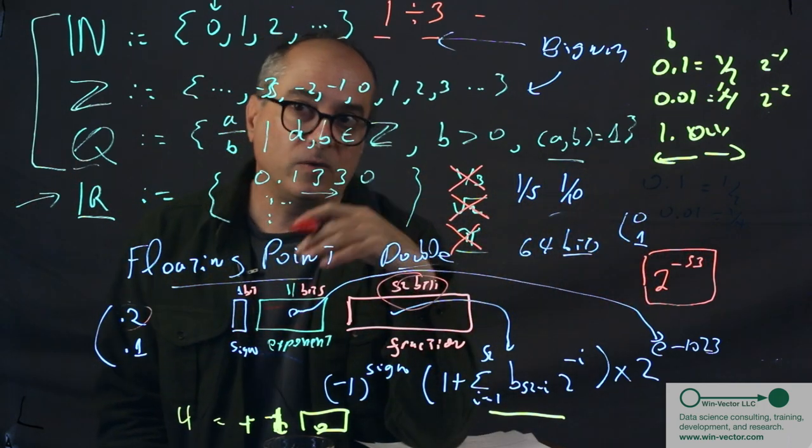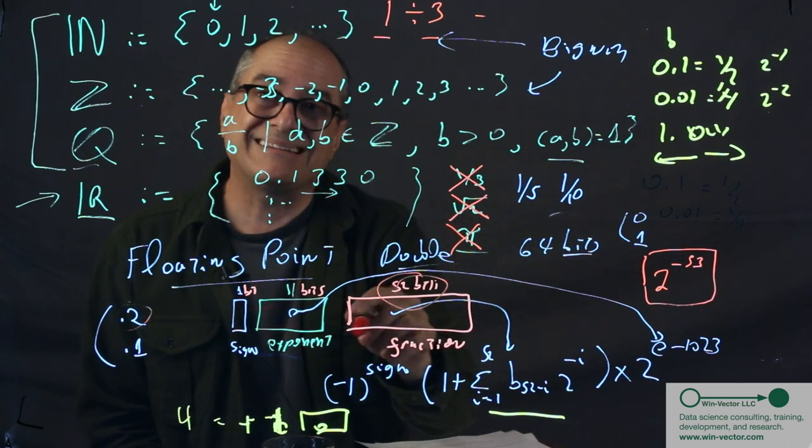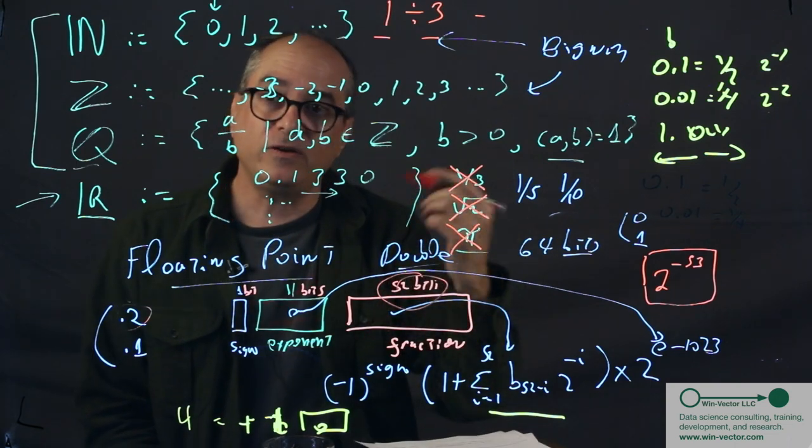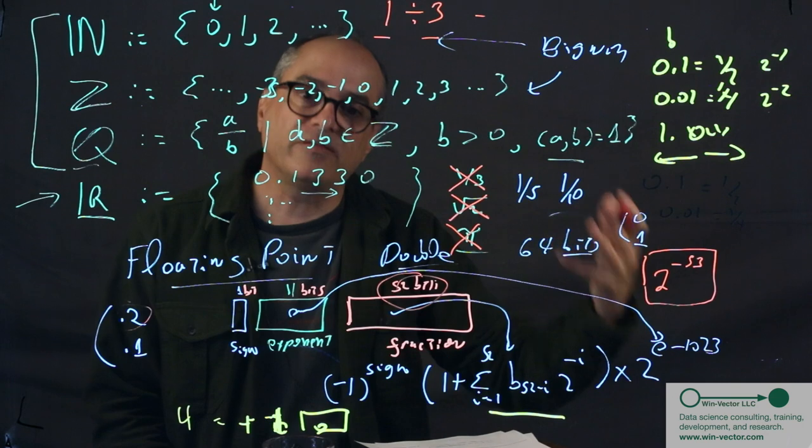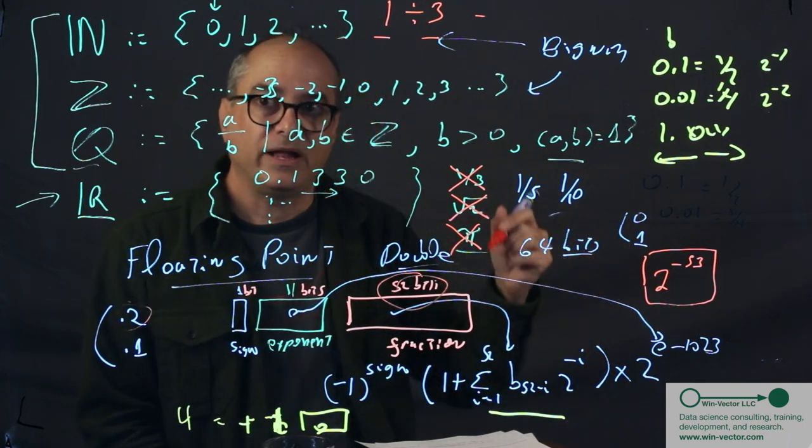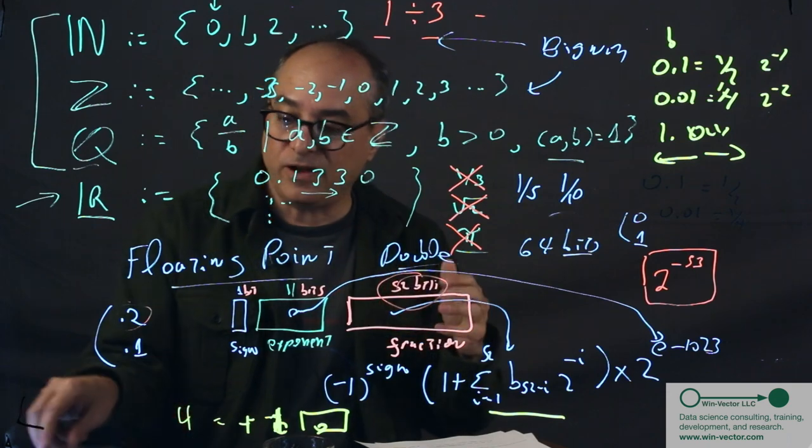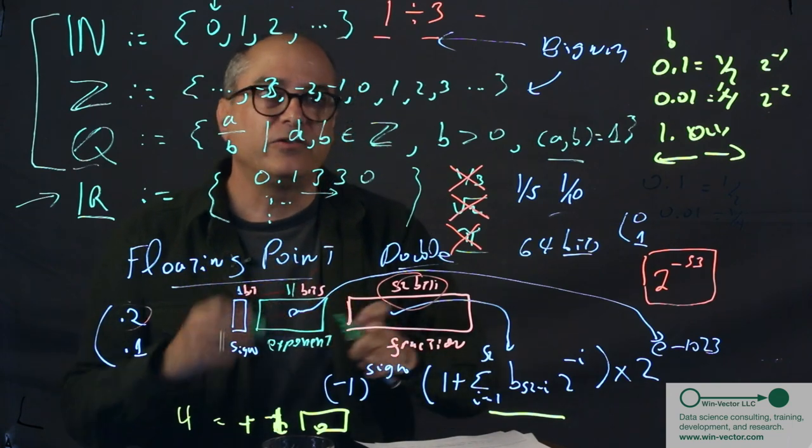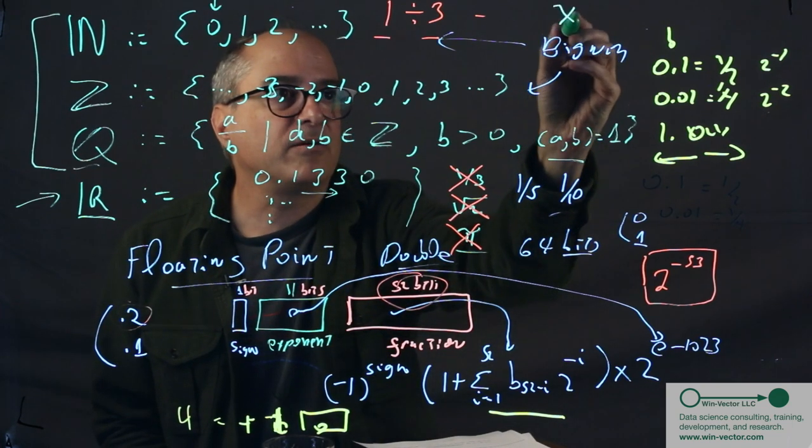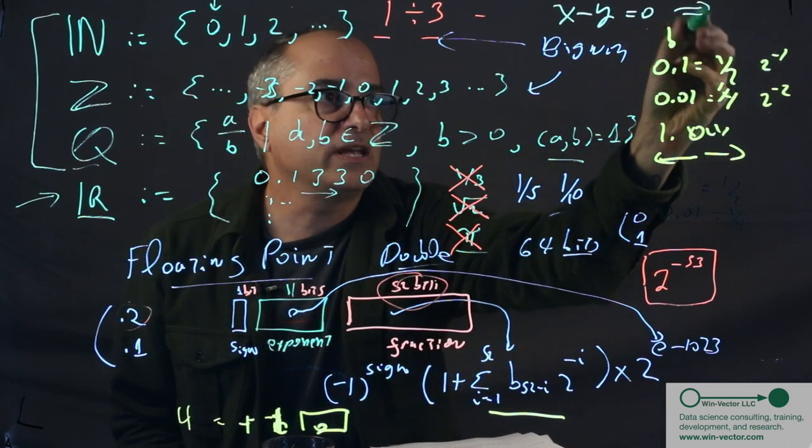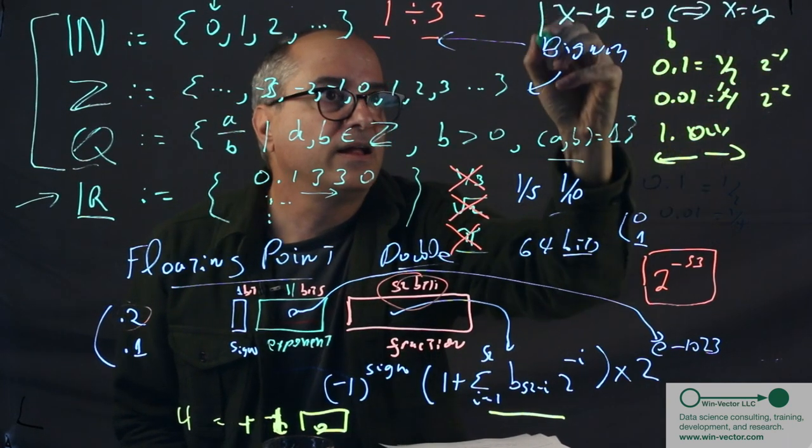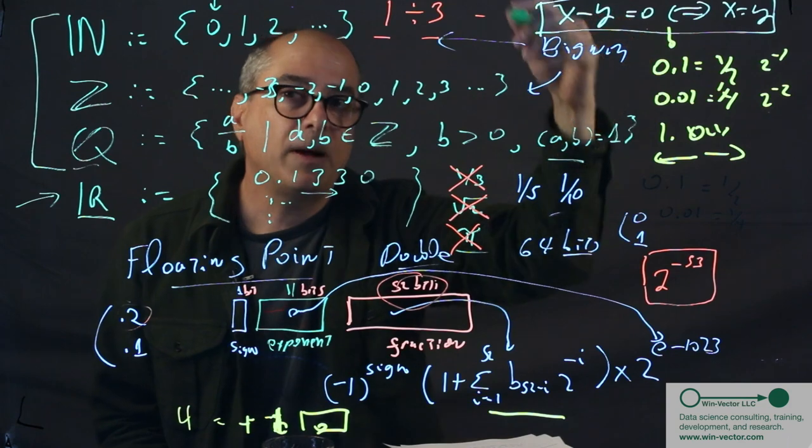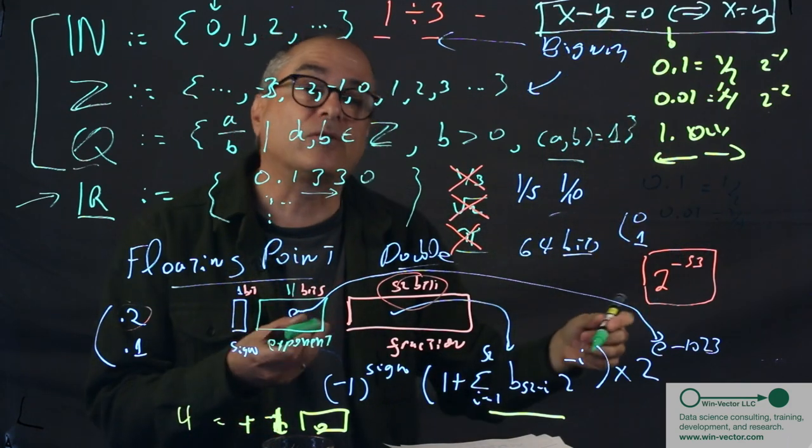However, it also means we cannot add disparate sized floating point numbers, which I'll give as an example that I'll attach on. So it turns out the simple act of just summing up a list of numbers might not work on floating point. And also, we don't have the field axioms, which is sort of the whole point of working with numbers. So we don't have things like x minus y equals zero if and only if x equals y.